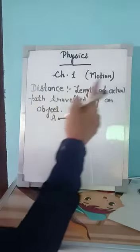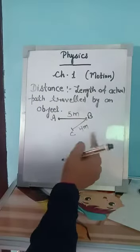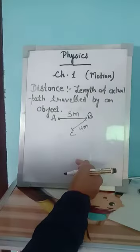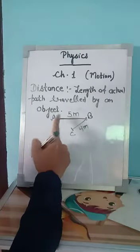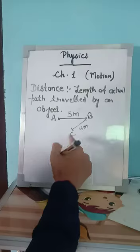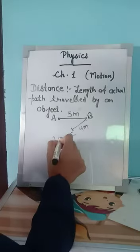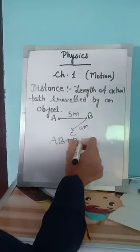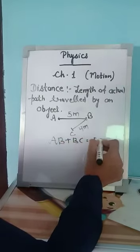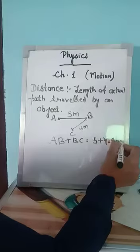And distance क्या है? Length of actual path. याने कि actual में कितना path उसने travel किया है, वो उसकी distance है. Actually कितना travel किया है? A to B move किया, B to C move किया. तो actual path traveled by boy कितना आ गया? AB plus BC. That is 5 plus 4 is equal to 9 meter.